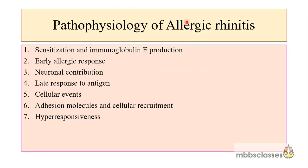Now let us come to the pathophysiology of allergic rhinitis. To better understand the pathophysiology, it is divided into different subcategories: sensitization and immunoglobulin E production, the early allergic response, neuronal contribution to allergic rhinitis, late response to the antigens, a series of cellular events and adhesion molecules, and recruitment and hyper-responsiveness.